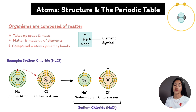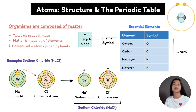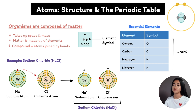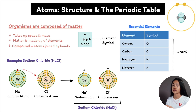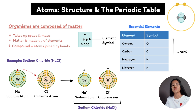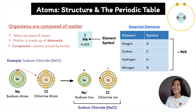Of the 92 natural elements, about 20 to 25 percent are essential elements that an organism needs to live. Four elements make up around 96 percent of living matter: oxygen, carbon, hydrogen, and nitrogen. The remaining four percent includes calcium, phosphorus, potassium, sulfur, sodium, chlorine, and magnesium. There are also trace elements, which an organism needs but only in small quantities — examples include zinc, copper, iron, and manganese.